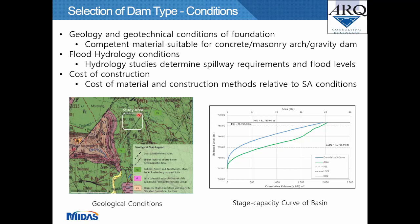A geological map shows the local conditions at the dam site. The green area indicates Gabbro, Norite, and Noritic igneous rock — very competent, only moderately or lightly fractured. A stage-capacity curve graph for the dam basin is also shown.